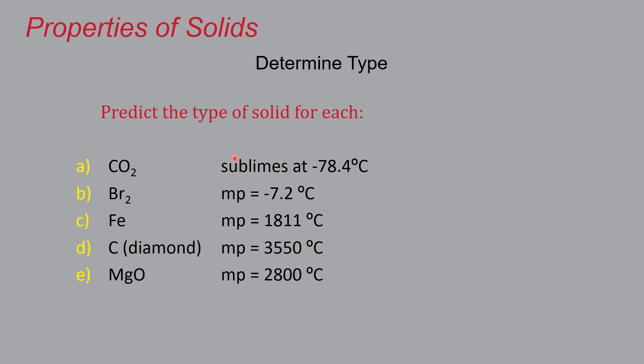But anyway, whether you go from solid to liquid or directly from solid to gas, the solid phase is no longer favored at temperatures above 78 degrees below zero Celsius. So this is a fairly low temperature. This is a covalent compound. Both of those indicate that this is probably a molecular solid.